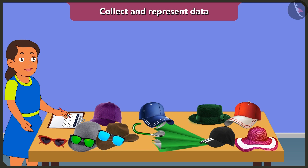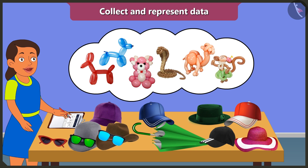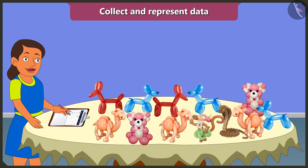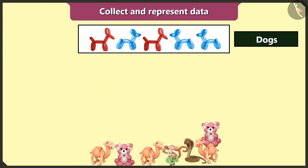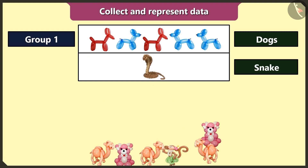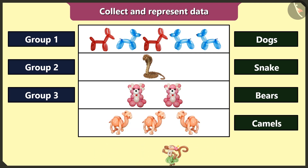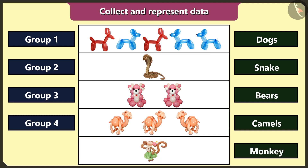My birthday is approaching now, so I will collect data about the types and how many balloons I have so I can gift them to all my friends coming to my birthday party. So first of all, I will make groups of similar animal-shaped balloons: first group of dog-shaped balloons, second group of snake-shaped balloons, third group of bear-shaped balloons, fourth group of camel-shaped balloons, and fifth group of monkey-shaped balloons.